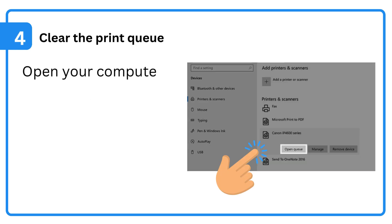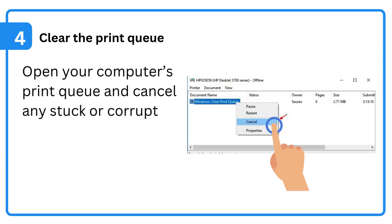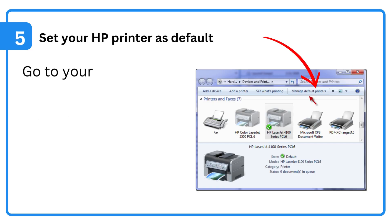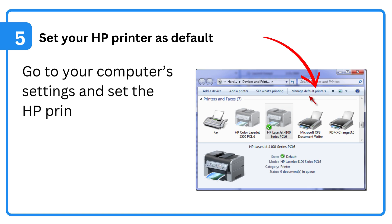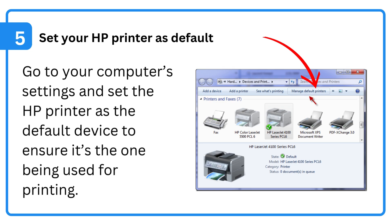4. Clear the print queue — open your computer's print queue and cancel any stuck or corrupt print jobs. 5. Set your HP printer as default — go to your computer settings and set the HP printer as the default device to ensure it's the one being used for printing.